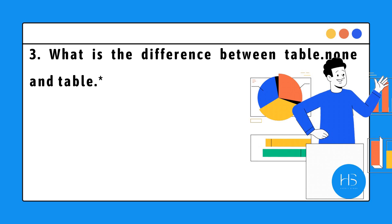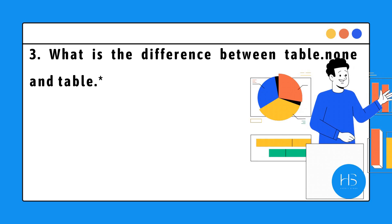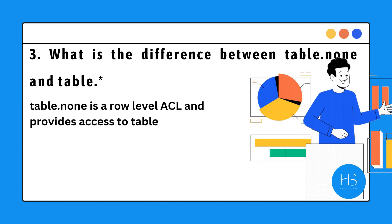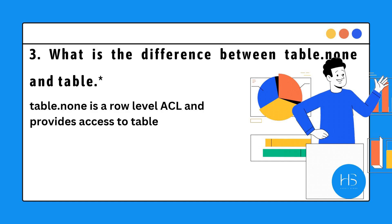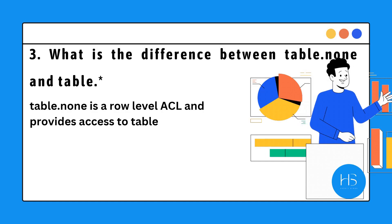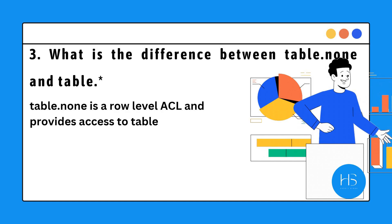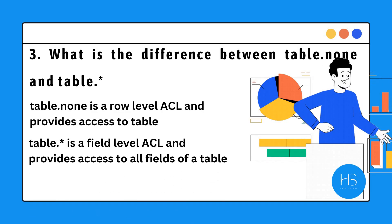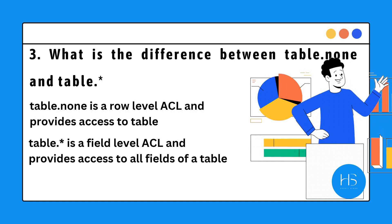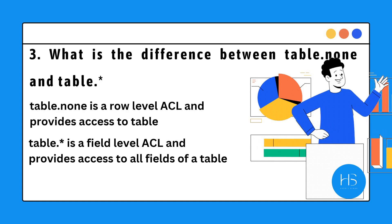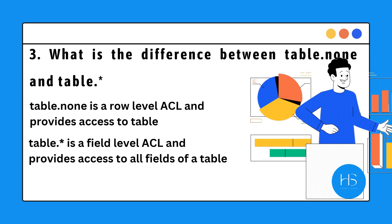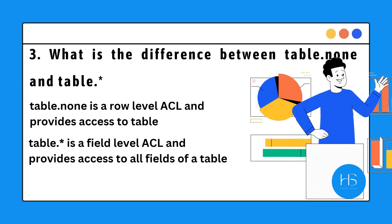The third question is: what is the difference between table.none and table.star? Table.none is a row level ACL and provides access to the table. When you define table.none in your ACL, you are providing access for a particular role to that table. Table.star means you are providing access to all the fields on that table. So if you want to provide access to a user on a specific table and its records, you would have to create two ACLs: the read level table.none and then read level table.star, and then the user would be able to see those records.